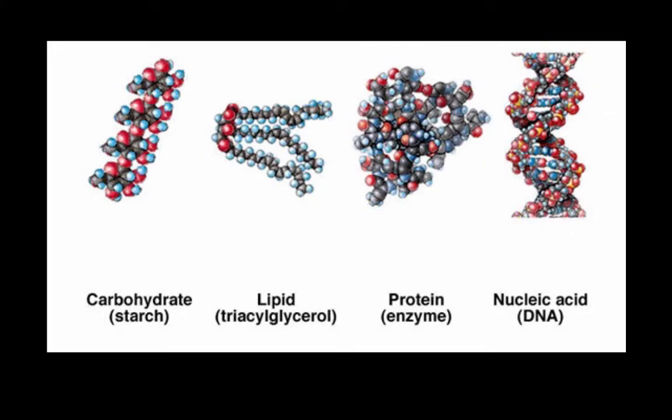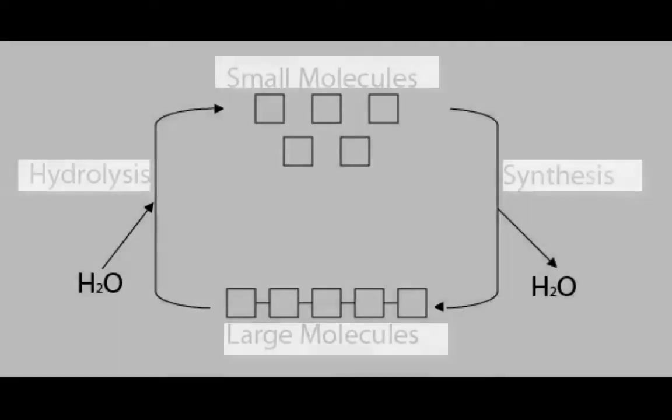Carbohydrates are used for storing energy, lipids are also known as fat, protein in humans would be such things as muscle, and nucleic acid is found in DNA. These long chains of molecules are made up of smaller subunits called monomers.